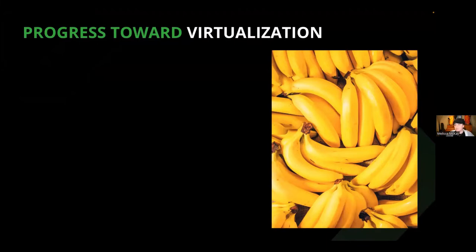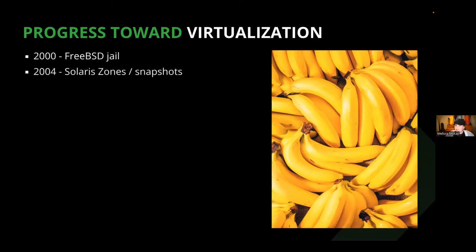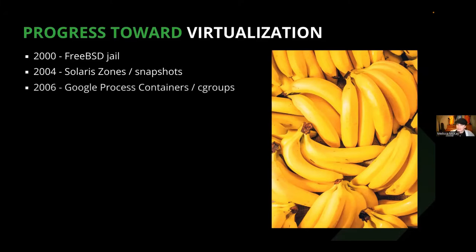Chroot was great — it solved some specific problems, but more was needed. This is when the jail command came about, introduced in 2000 by FreeBSD. Jail is more sophisticated than chroot, with additional features to further isolate file systems, users, and networks, including the ability to assign an IP address to each jail. Then in 2004, Solaris Zones brought us ahead further by giving us full user process and file system space and access to system hardware. Solaris Zones also helped us get familiar with the concept of snapshotting a file system, which is important when you work with images.